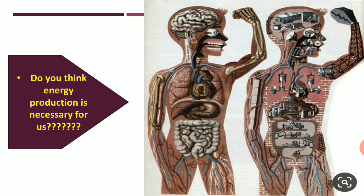Our body is actually a production house where different types of systems are involved in the production of different things. That means there are different types of biochemical processes in our body for our survival. To execute these biochemical processes, we need energy. But what is the source of energy, or how is energy produced in our body?